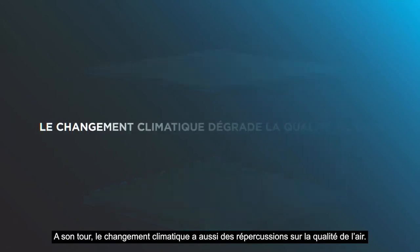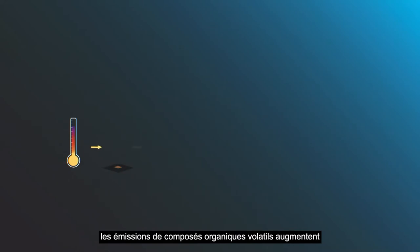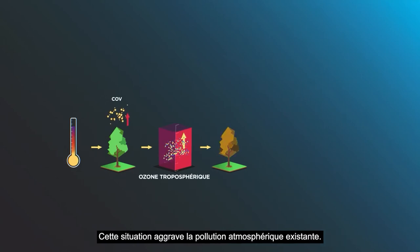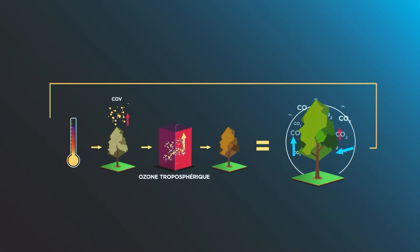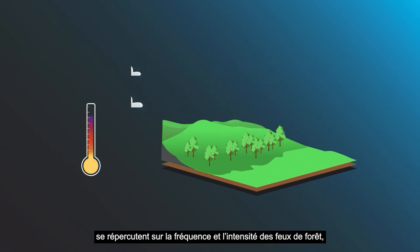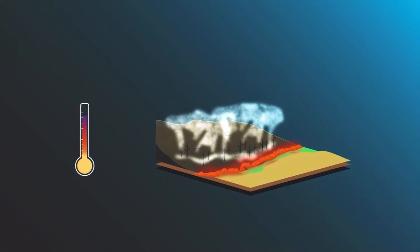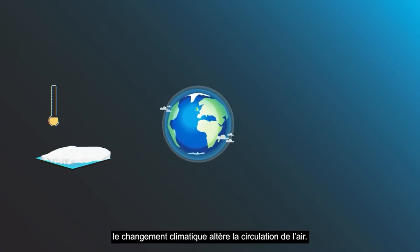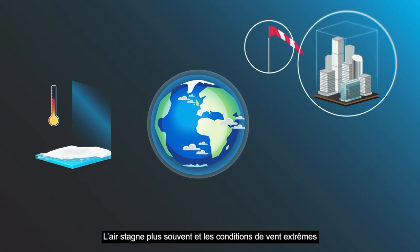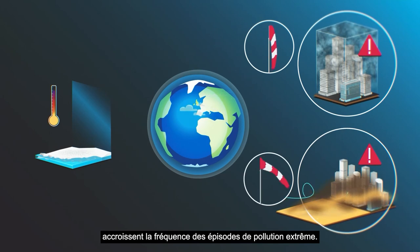Climate change in turn impacts air quality. Rising temperatures increase the emission of volatile organic compounds that contribute to the formation of tropospheric ozone and aerosols, and worsen existing levels of air pollution. Rises in temperature and changes in precipitation impact the frequency and intensity of wildfires that also contribute to air pollution. As climate change impacts weather patterns, it leads to changes in air circulation — more frequent periods where the air remains still, stagnated — and extreme winds lead to more frequent extreme pollution events.